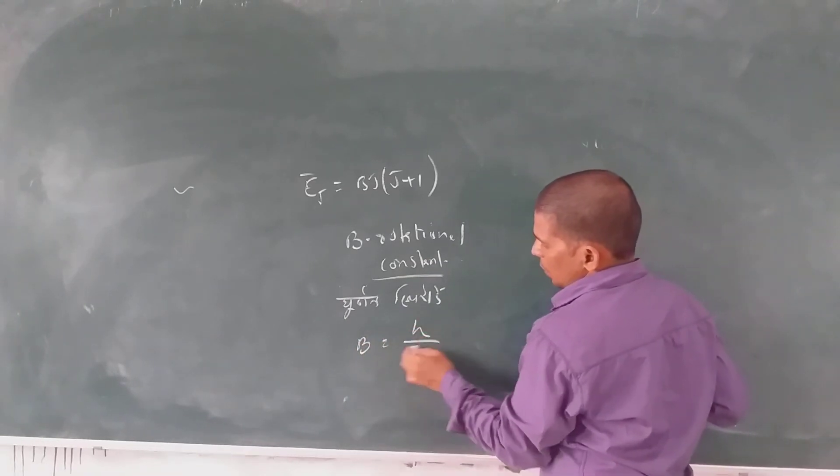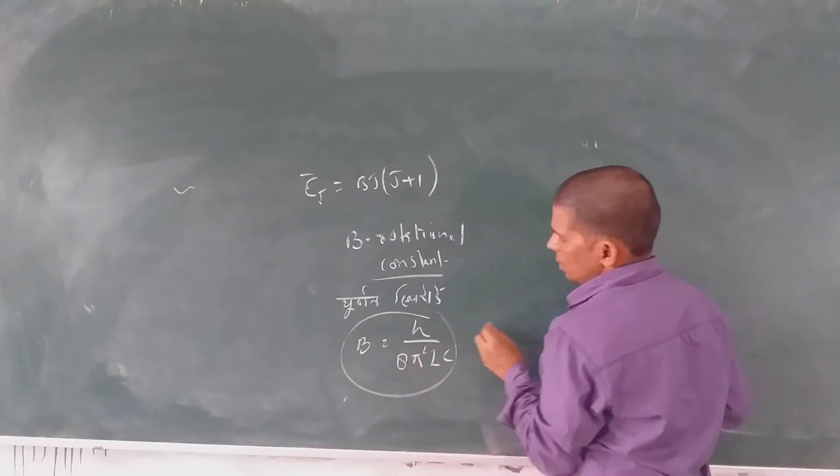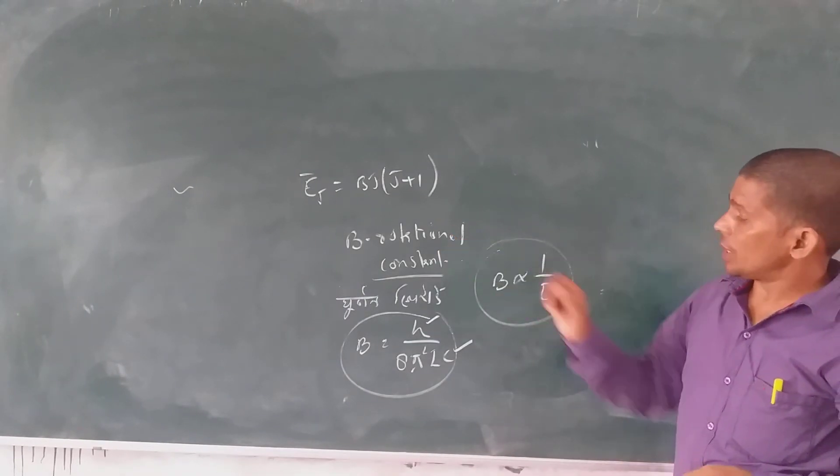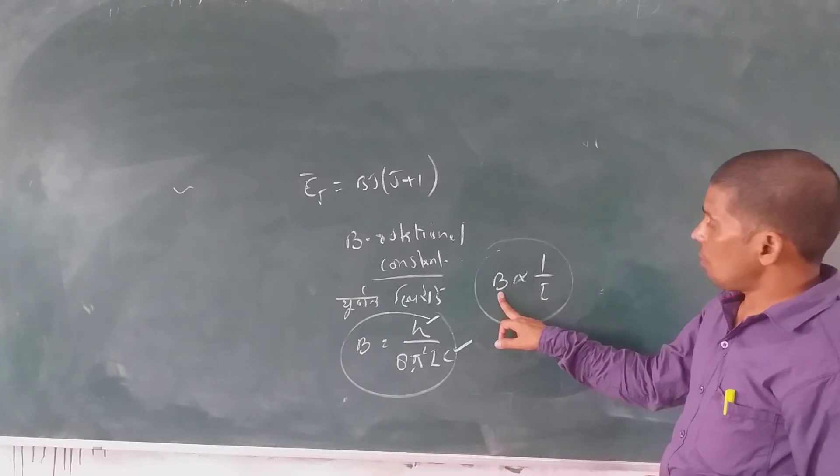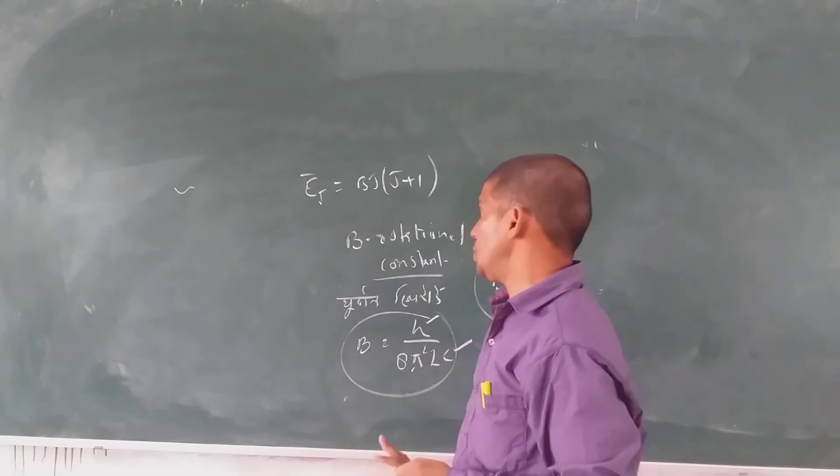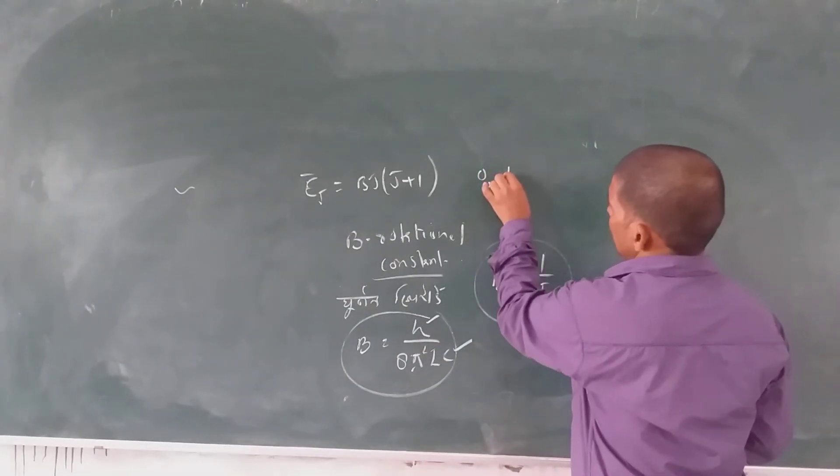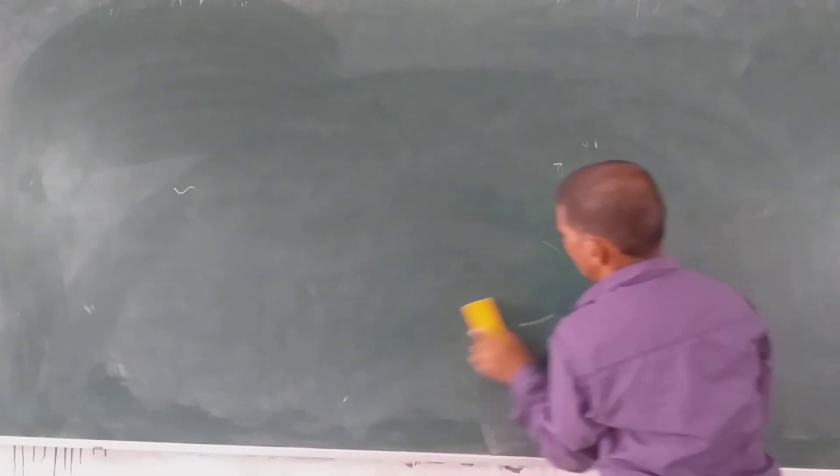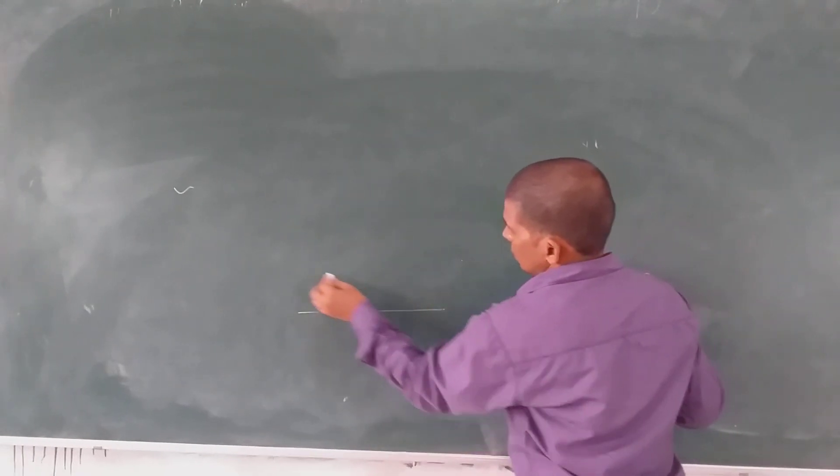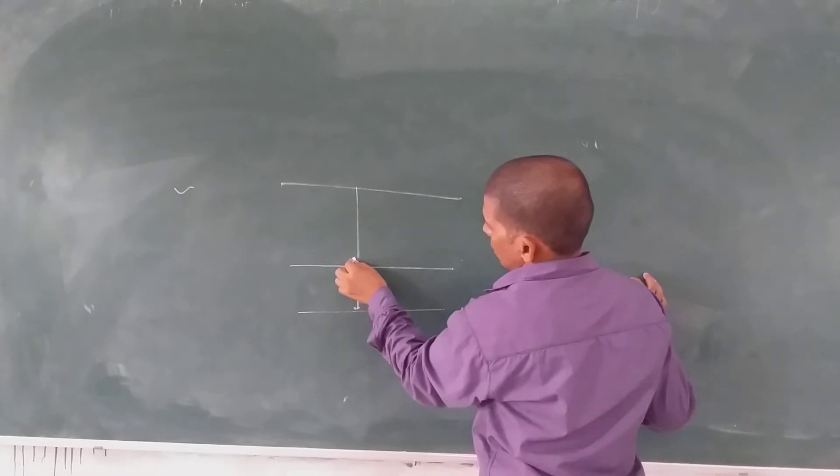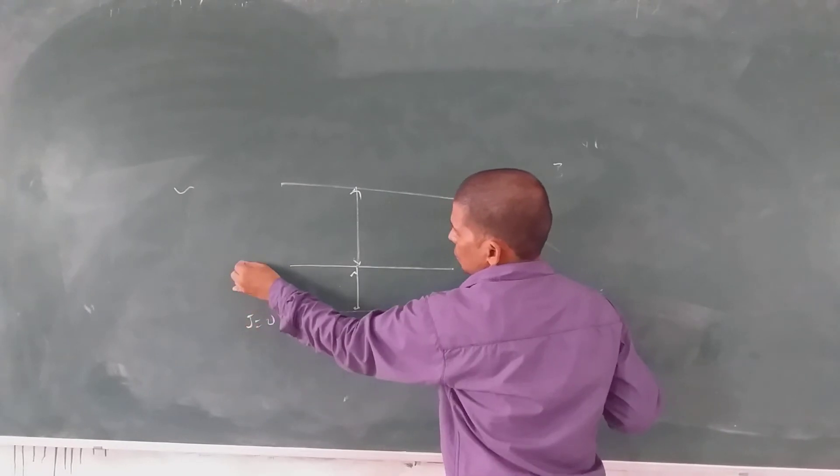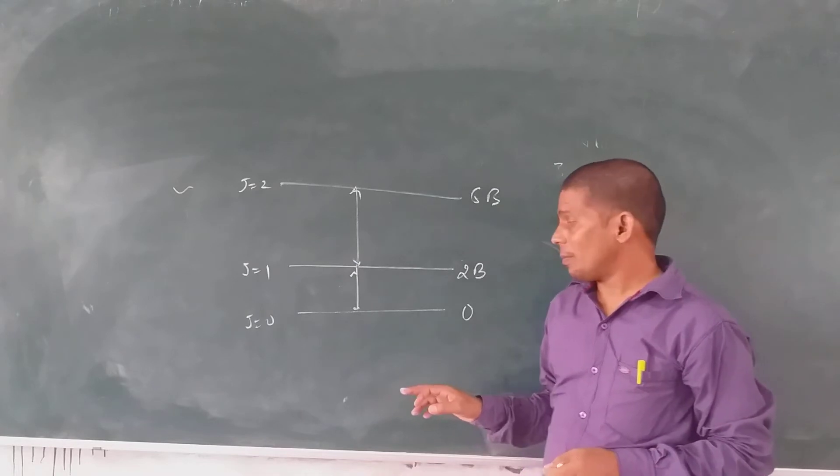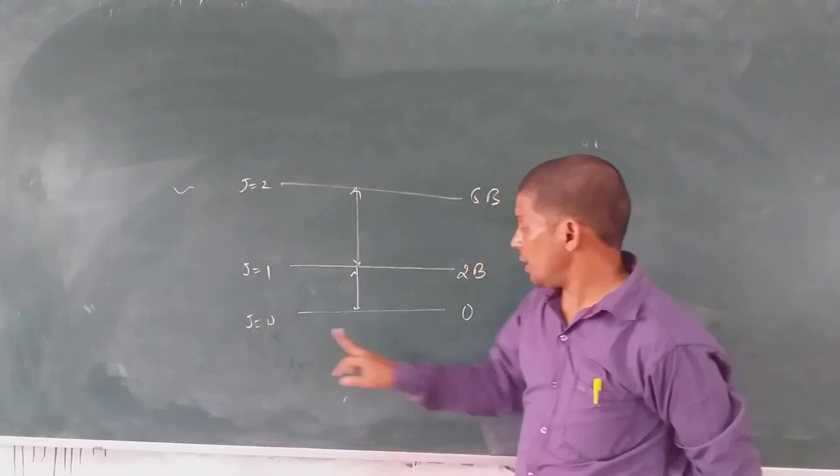If the moment of inertia changes, then B changes. And if B changes, then the rotational quantum levels change. When we are at the ground state, there's no rotational motion, so rotational energy is zero. In the excited state, we have rotational motion which brings rotational energy.